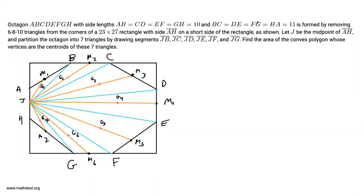Let J be the midpoint of AH and partition the octagon into 7 triangles by drawing segments JB, JC, JD, JE, JF, and JG. Find the area of the convex polygon whose vertices are the centroids of these 7 triangles.